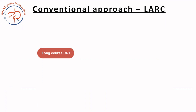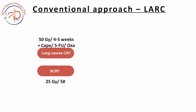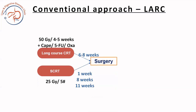In the conventional approach for locally advanced rectal cancer — T3, T4 or node-positive disease — the options are: long course chemoradiotherapy (50.4 Gy in 4 to 5 weeks plus capecitabine, 5-FU, oxaliplatin, and leucovorin as radiosensitization), or short course radiation therapy (25 Gy in 5 fractions). After long course CRT, we wait 6 to 8 weeks, reassess, and then plan surgery. After short course radiotherapy, we initially operated after one week, then studies showed we can wait up to 8 weeks, now up to 11 weeks, and with TNT we are waiting up to 16 to 18 weeks aiming for pathological complete response. After neoadjuvant therapy, patients undergo surgery, then adjuvant chemotherapy based on preoperative staging and histopathology.